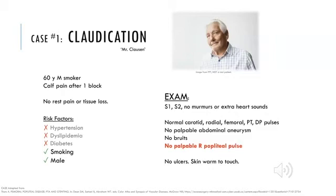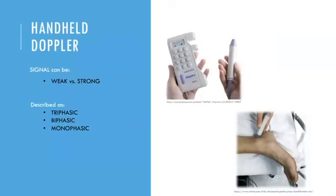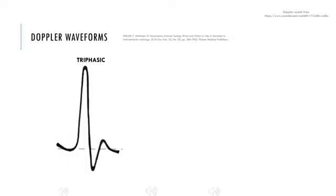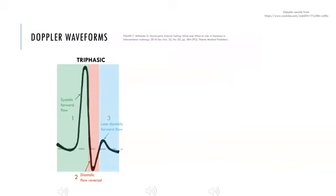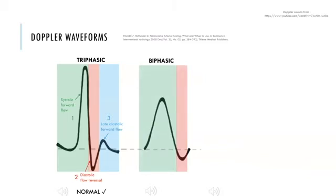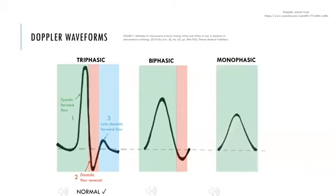You grab the handheld Doppler and place the probe over the popliteal artery. A Doppler signal can be weak or strong and described as triphasic, biphasic, or monophasic. Triphasic flow has three phases: the first sound is from systolic forward flow, the second from a brief reversal of flow during early diastole, and the third from late diastolic forward flow. Triphasic flow is normal. In biphasic flow, there is a loss of either of the diastolic phases, which can be normal or indicate calcification or mild to moderate disease. Monophasic flow is only one phase and is always abnormal.